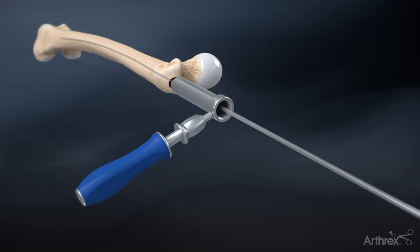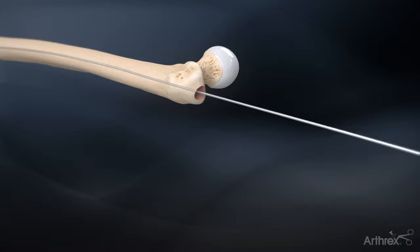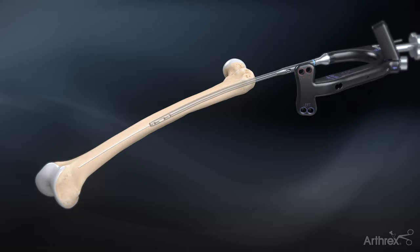Ream 1 to 1.5 mm over desired nail diameter. Introduce the nail into the femur over the ball nose guide wire.